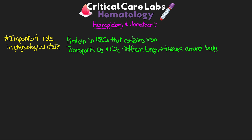We have adult hemoglobin, which is structurally different than fetal hemoglobin — I'm going to be specifically talking about adult hemoglobin here. It's important to know the normal values, and these actually differ between men and women. For men, the normal value is going to be 14 to 18 grams per deciliter. And for women, the normal value is going to be 12 to 16 grams per deciliter.